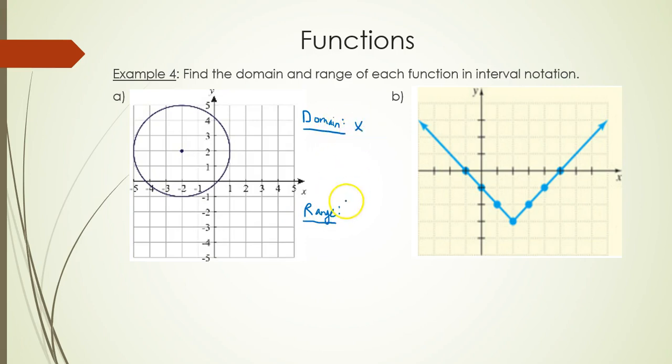Remember the domain would be x values, the range would be y values. We want to give the answer in what is known as interval notation. So here's the trick: to define the domain or x values which the graph is defined, you look at the furthest left point of the graph. What's the x value? Negative 5.